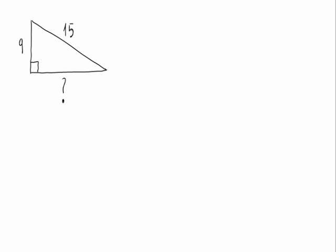Looking at the triangle on the screen, we can see that it is a right-angled triangle because of this angle right here. We're asked to calculate the question mark side. Let's call the question mark X, and we can see that it is a leg of the triangle.